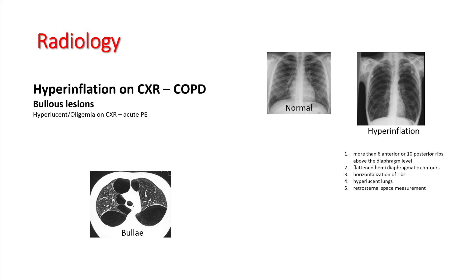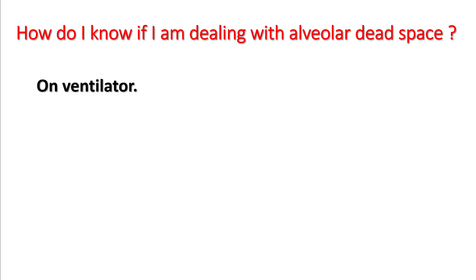Hyperlucency on X-ray and oligemia on chest X-ray can be seen in acute pulmonary embolism, though these are much rarer to observe in the ICU. In the ICU, things are a little easier because your patient is on a ventilator.